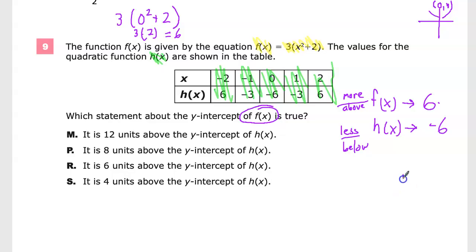So to get from negative six down here all the way up to positive six, it's going to take me six to get to here, and then six more there, and six plus six is twelve, which I know you know. I'm just putting all that out for you. So I can say it's twelve more or it's twelve above. This one's twelve less, twelve below. It is twelve units above the y-intercept of h(x).